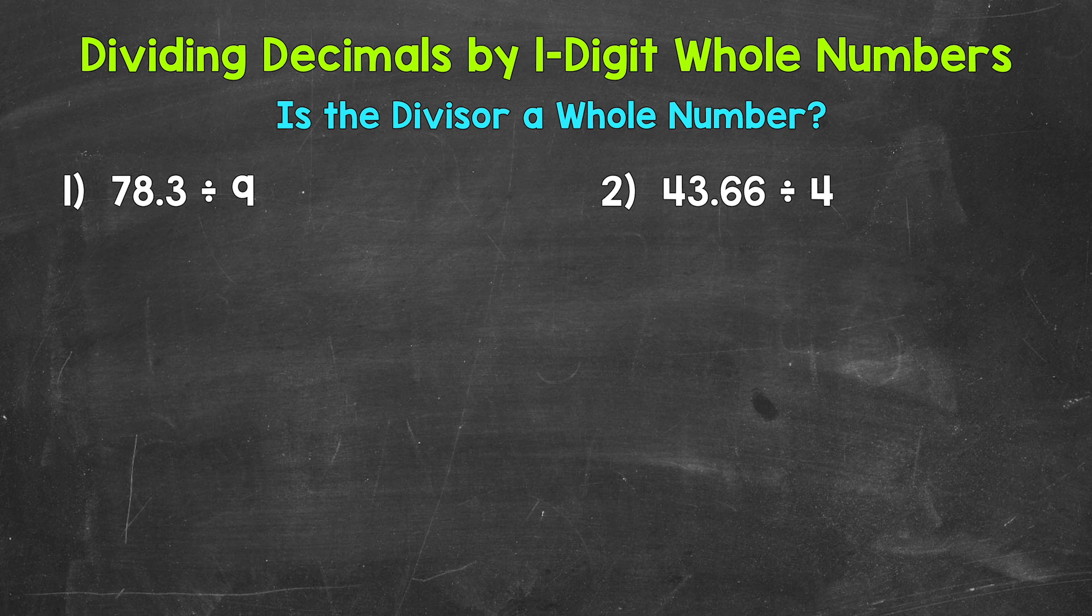Let's jump into number one, where we have 78.3 divided by 9. The first thing that I'm going to do, I'm going to set this problem up. That way we can go through the division process. 78.3 is the dividend, the number we are dividing. That goes under the division bar.